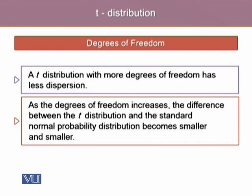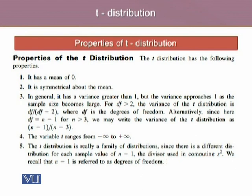A T-distribution with more degrees of freedom has less dispersion. As the degrees of freedom increases, the difference between the T-distribution and the standard normal probability distribution becomes smaller and smaller. The T-distribution has certain properties. The very first property says that it has a mean of zero.